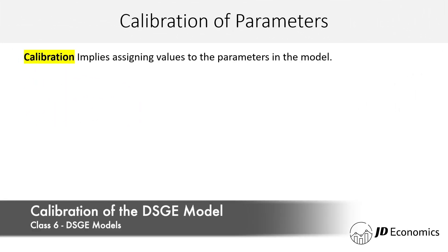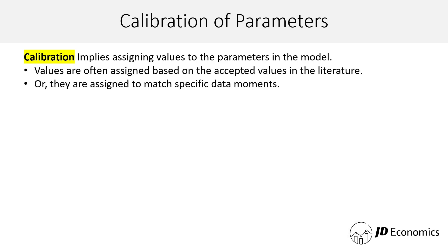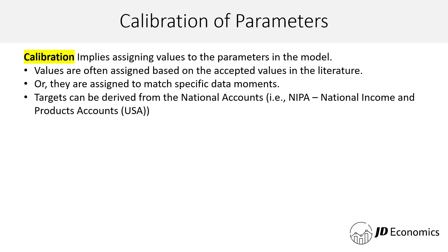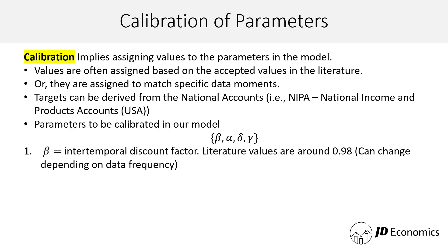Now let's talk about parameter calibration. Calibration implies assigning values to the parameters in the model. The values are often assigned based on accepted values in the literature or to match specific data moments. Targets can be derived from national accounts — for the US, for example, you would look at the NIPA, the National Income and Products Accounts. The parameters to be calibrated in our model are beta, alpha, delta, and gamma. For beta, the intertemporal discount factor, I'm going to use 0.98, noting that the value of beta can change depending on data frequency.